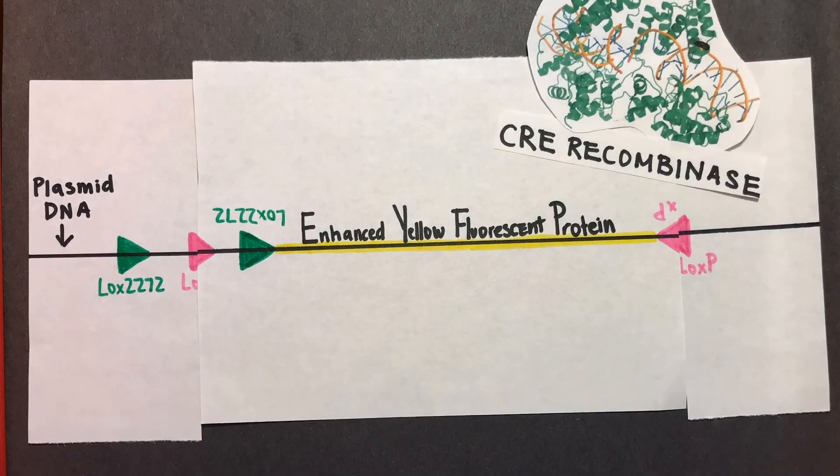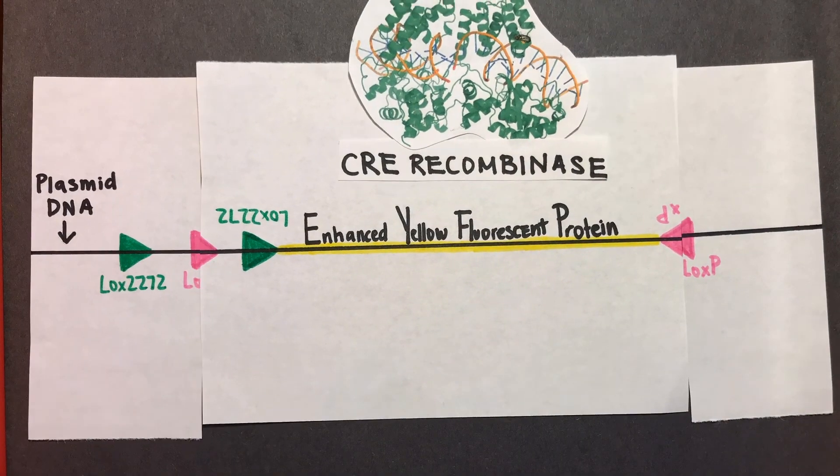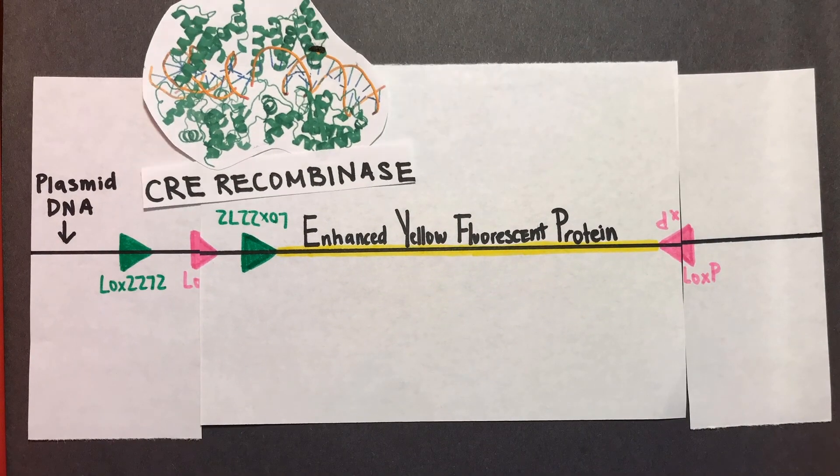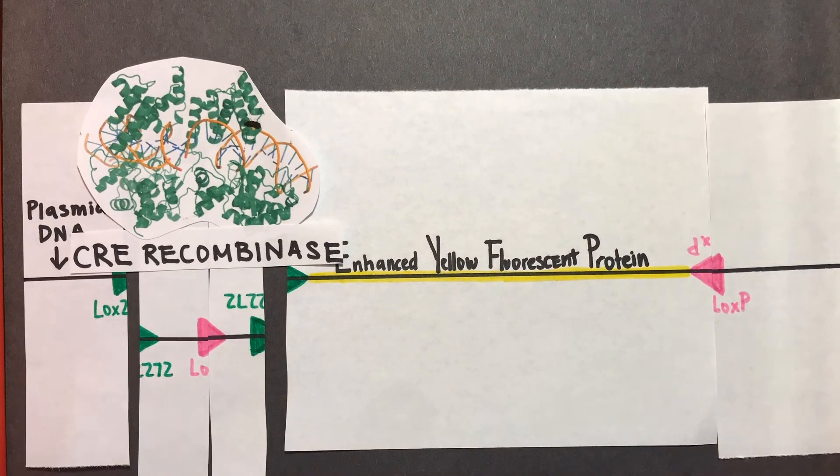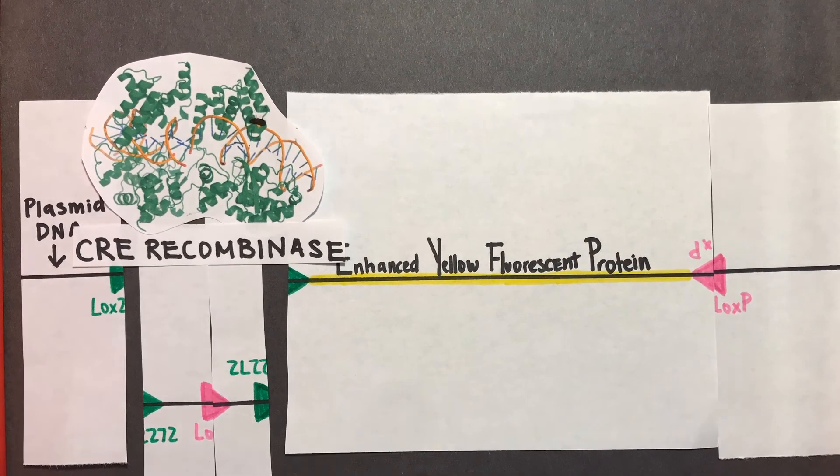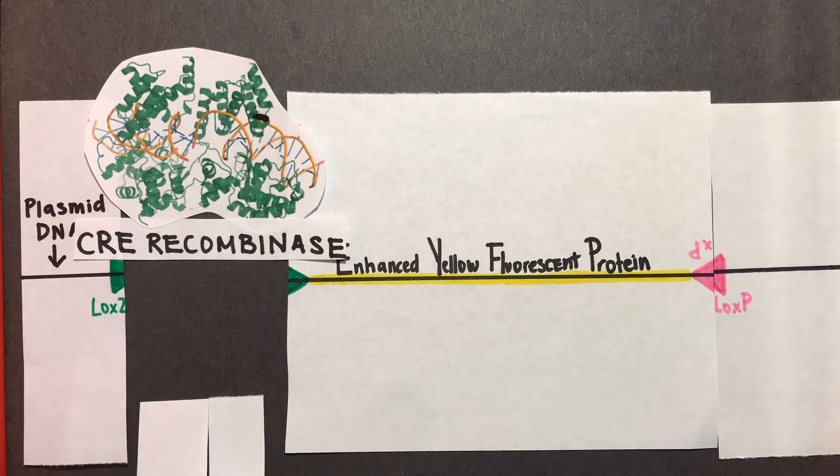So, once this is complete, the Cre recombinase recognizes the lox2272 sites and cuts them. Then, the portion of the gene between the two green arrows is deleted, and the Cre recombinase ligates the DNA back together.